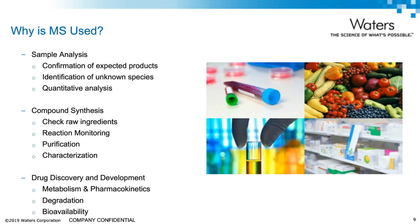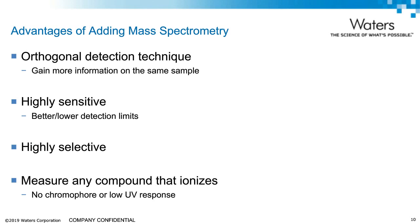Mass spec is an information-rich detection method and there are many advantages of adding it to your existing workflow. Mass detection can be coupled with other detectors such as LC, allowing you to gain additional information from the same sample during the same injection. Mass spec is also very selective and has generally lower detection limits than many other analytical techniques, meaning you can detect very low abundance molecular species. It can extract chemical information of a specific compound from a very complex mixture such as tissue, and can measure any compound that ionizes, including those with no chromophore or very low UV response.